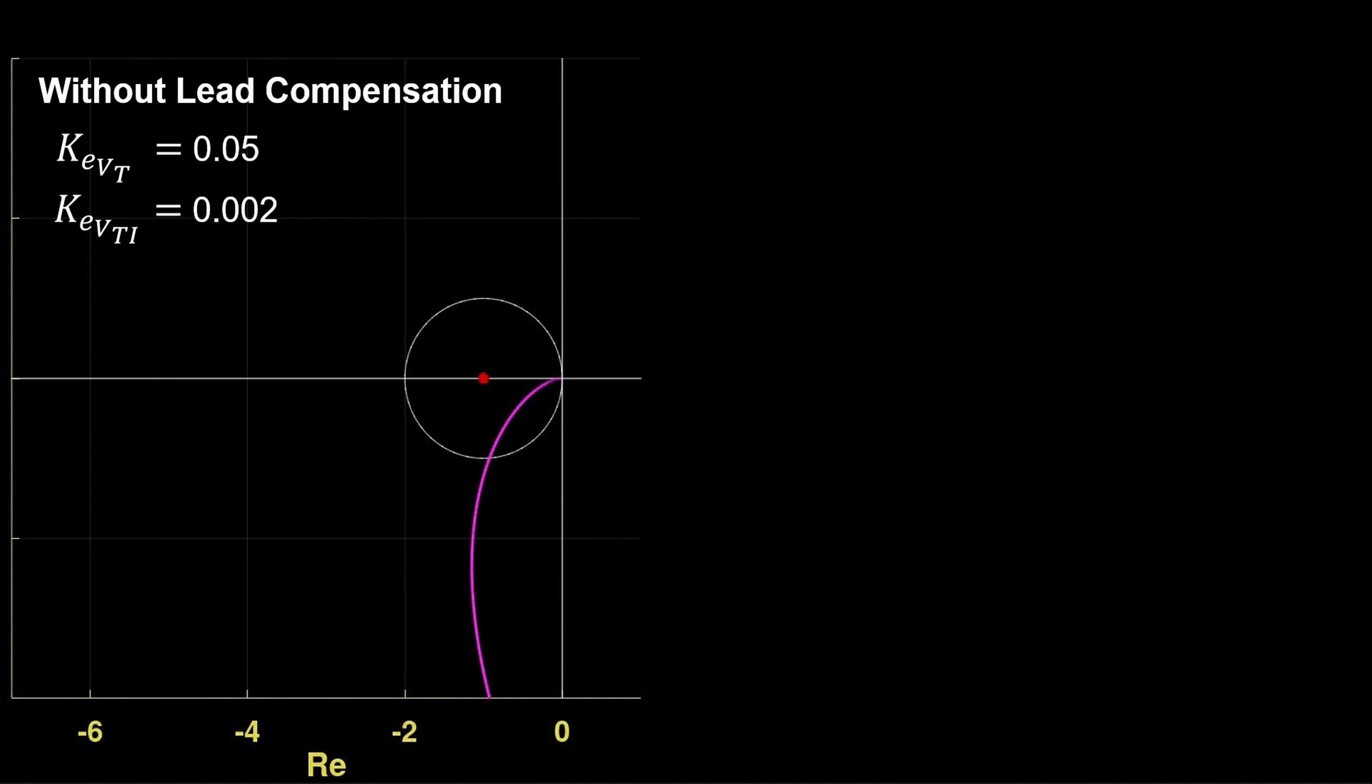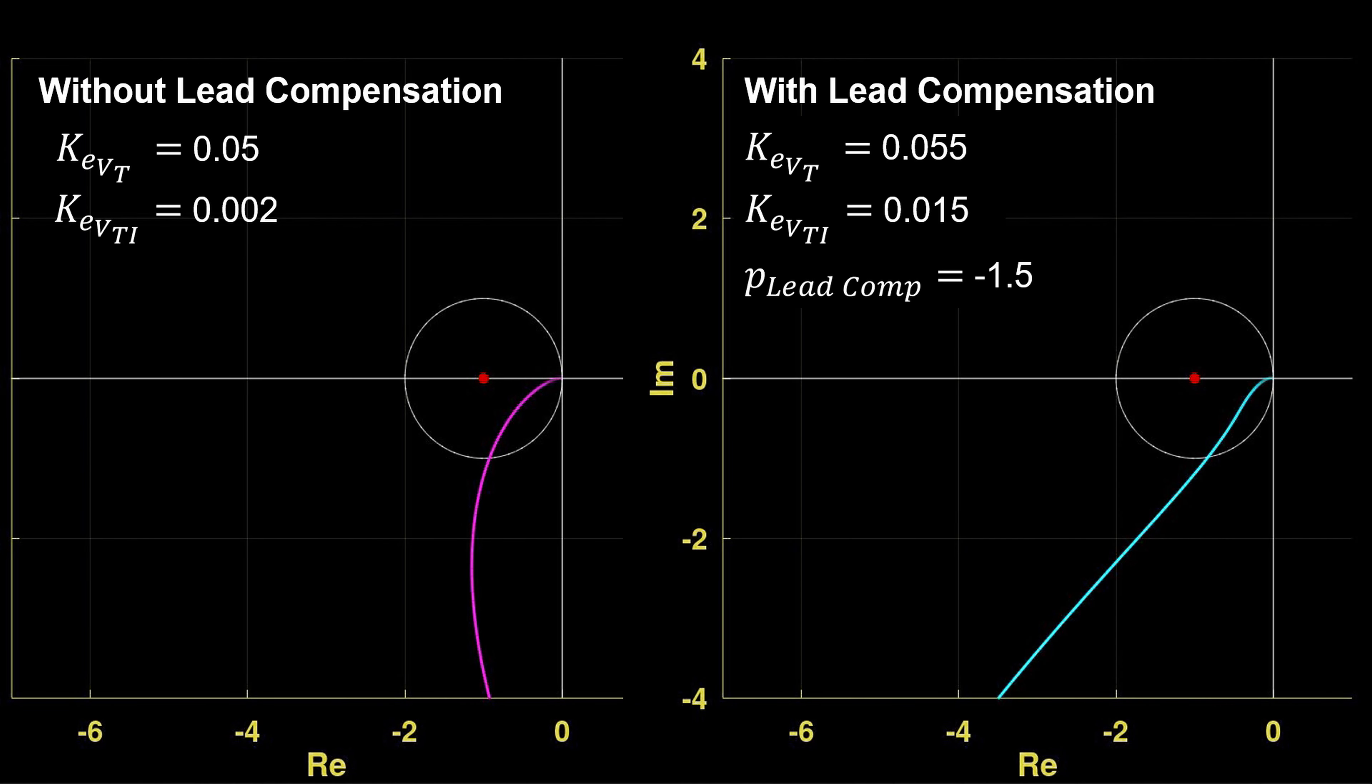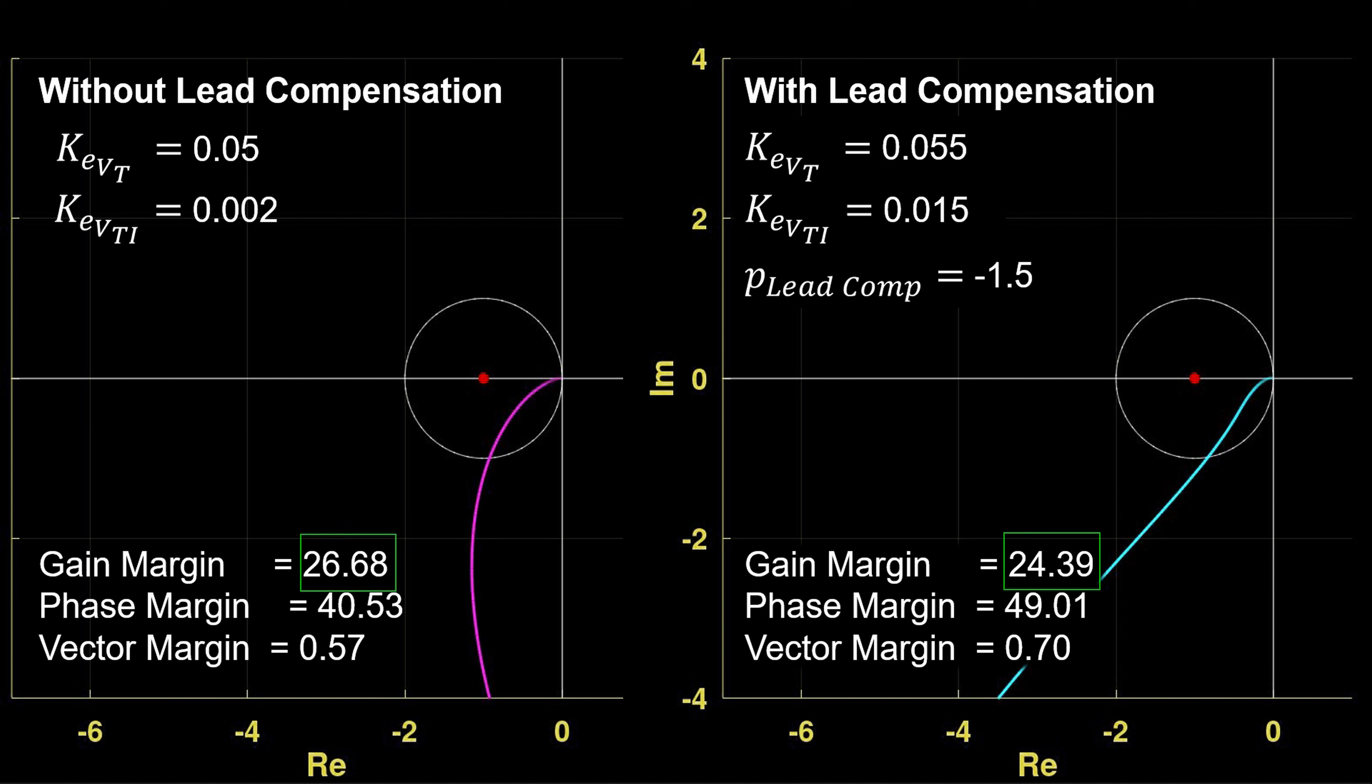Evaluating each loop gain, we get the Nyquist diagram without the lead compensator and that for the lead compensator. We tuned each loop differently, with the biggest difference in the integral gain of the lead compensator. By inspection, we can see in the disk the margins will be different. The gain margin with the lead compensator is slightly less. And the phase margin is significantly greater with the lead compensator added. Vector margin is also notably larger with lead compensation.